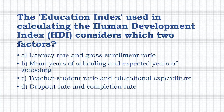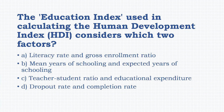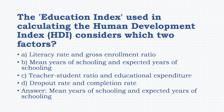The education index used in calculating the Human Development Index considers which two factors? Options: literacy rate and gross enrollment ratio, mean years of schooling and expected years of schooling, teacher-student ratio and educational expenditure, dropout rate and completion rate. The answer is: mean years of schooling and expected years of schooling.